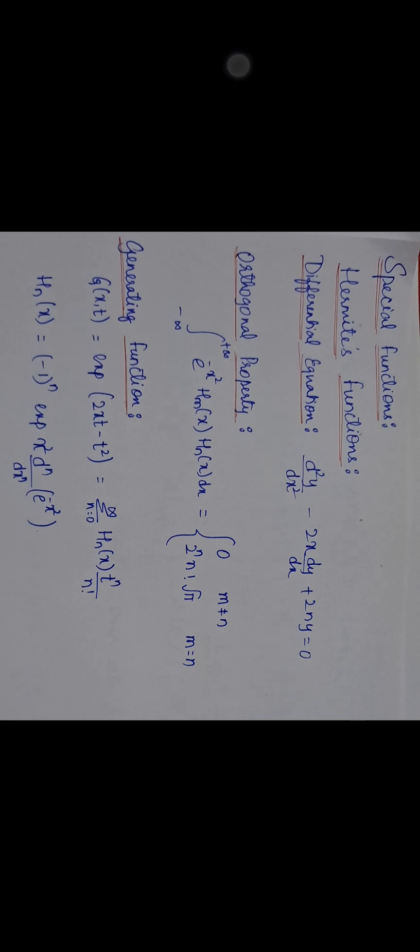Next comes Laguerre's function. The Laguerre differential equation is: x d²y/dx² + (1 − x) dy/dx + ny = 0. The generating function is: (1 − t) summation from n=0 to infinity of L_n(x)/n! · t^n = e^(−xt/(1−t)). The Rodrigues formula is: L_n(x) = e^x · (1/n!) · d^n/dx^n [e^(−x) · x^n].